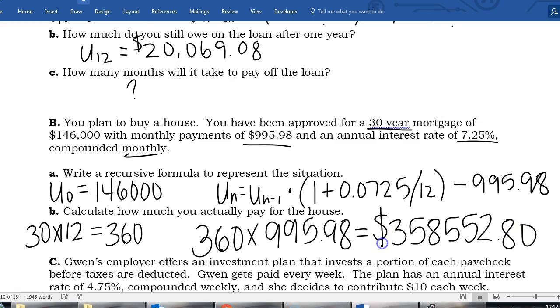Means that I'm actually paying $358,552.80 for my house. So I bought a house that cost $146,000 and I ended up paying almost $200,000 more, over $200,000 more than the house actually cost. All that extra money went to the bank that lent me the money in the first place.